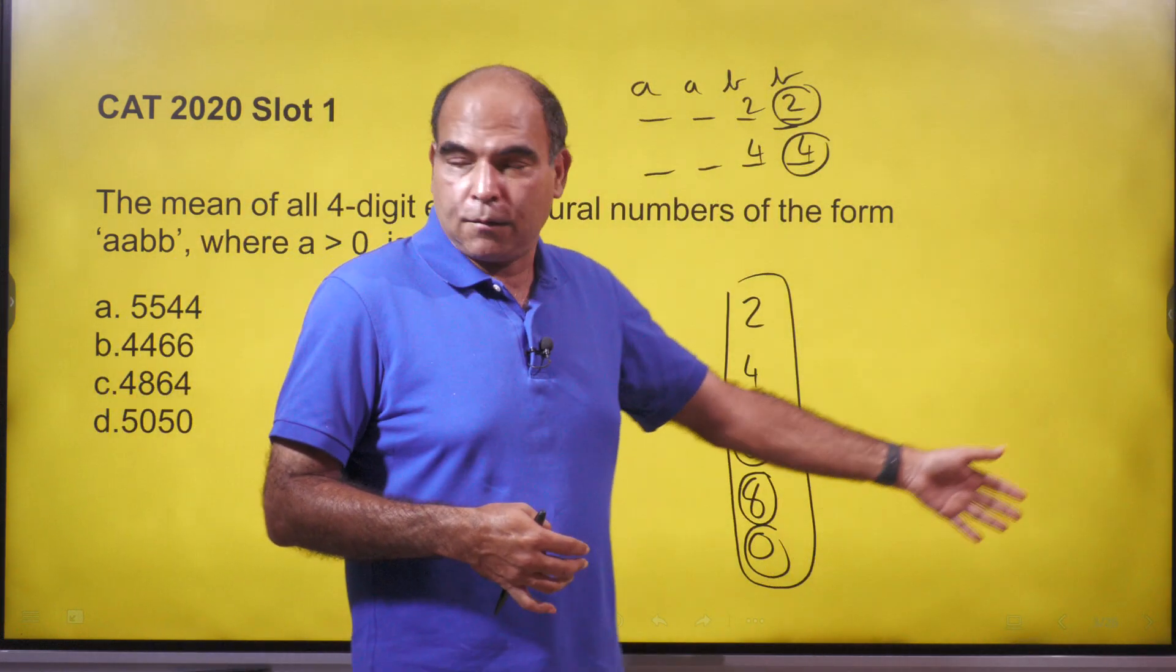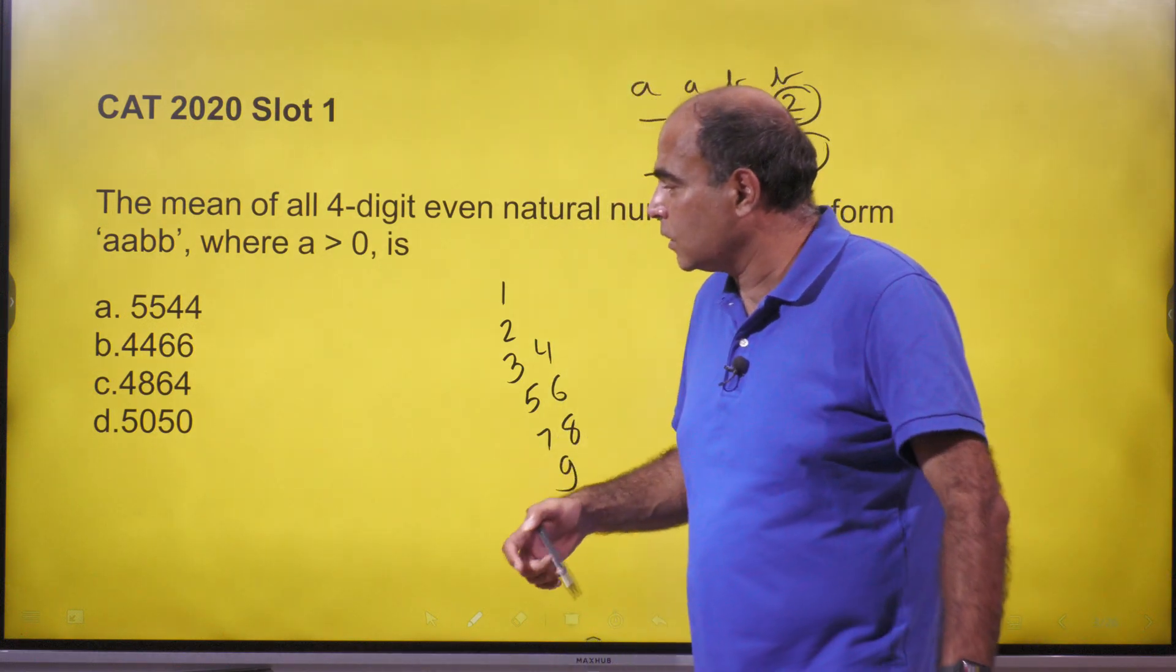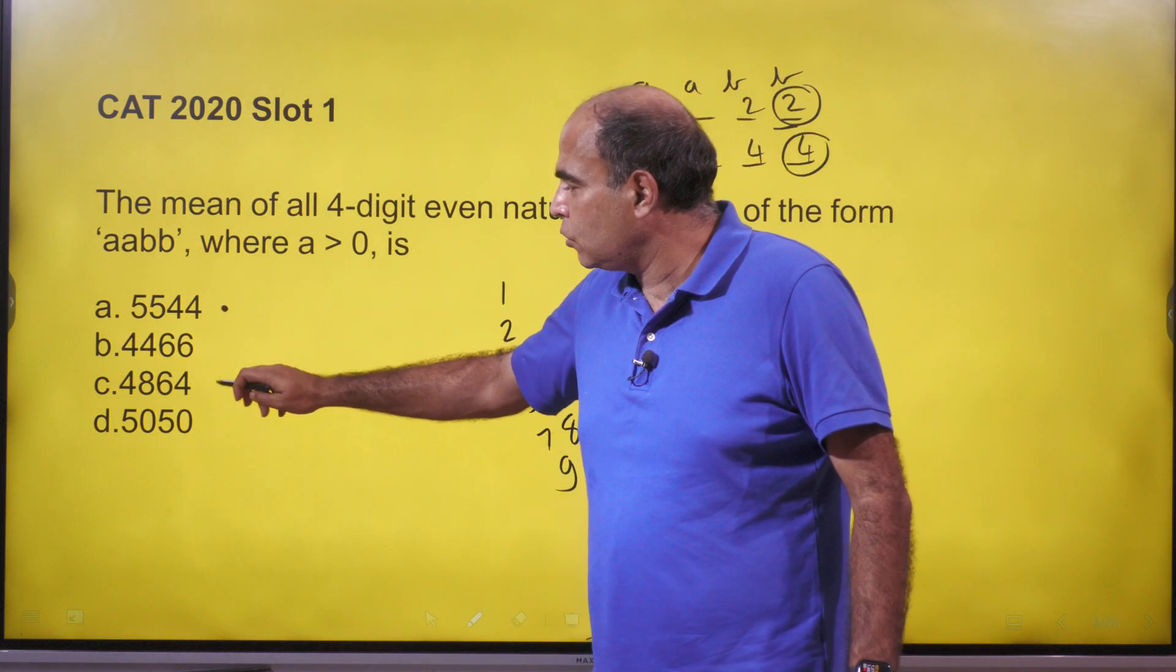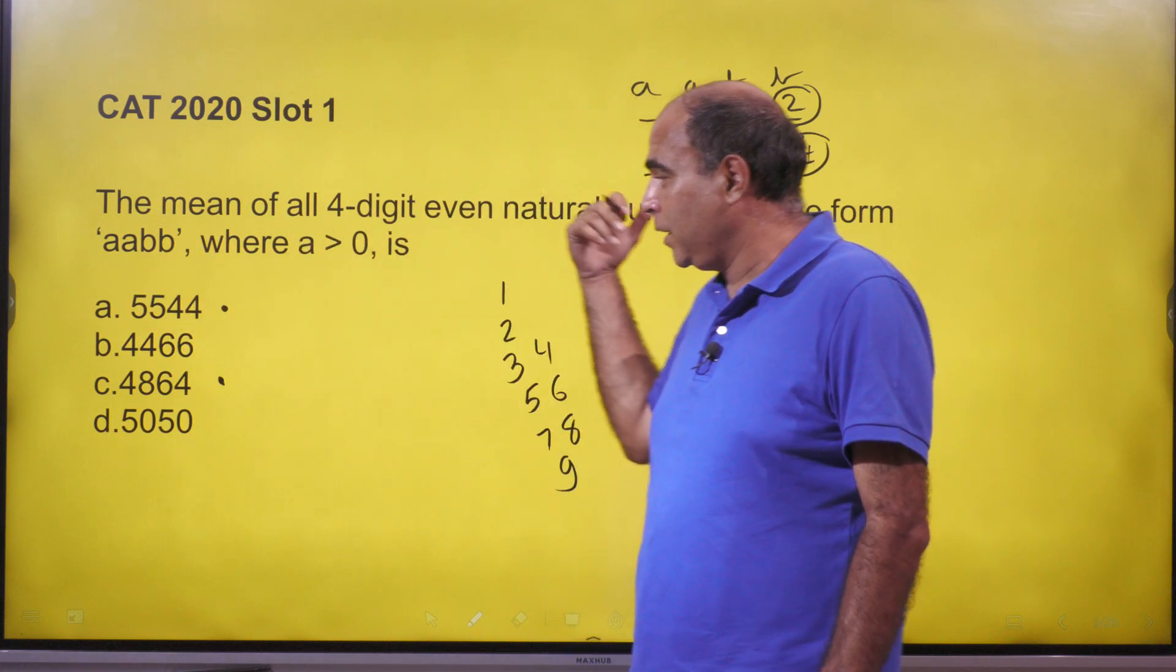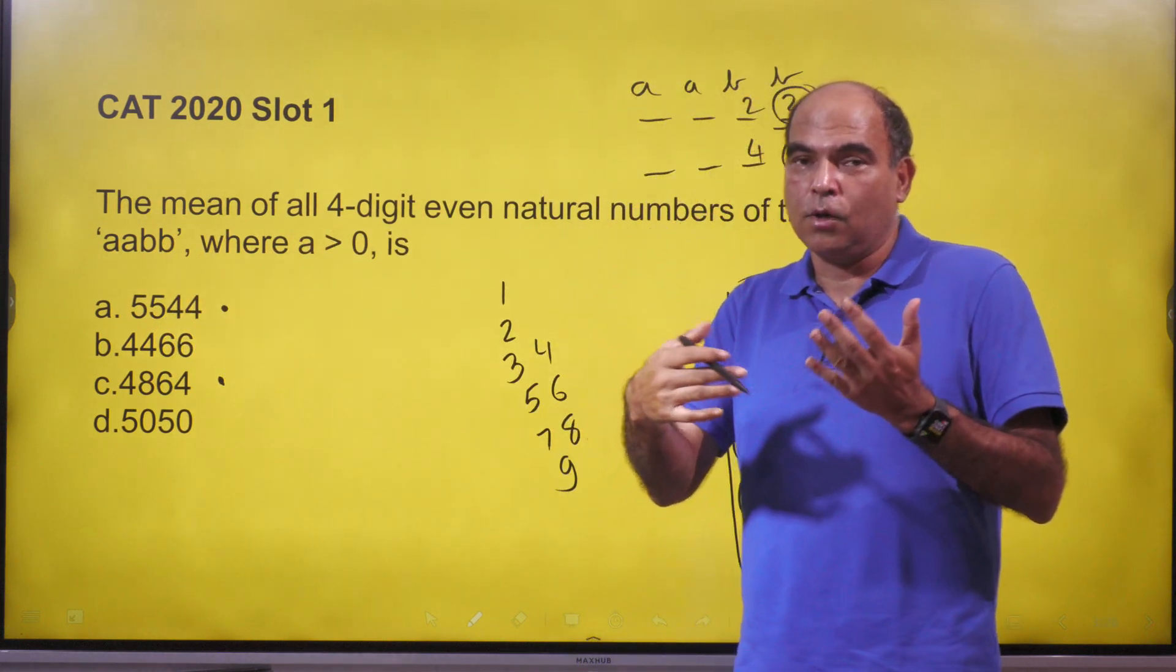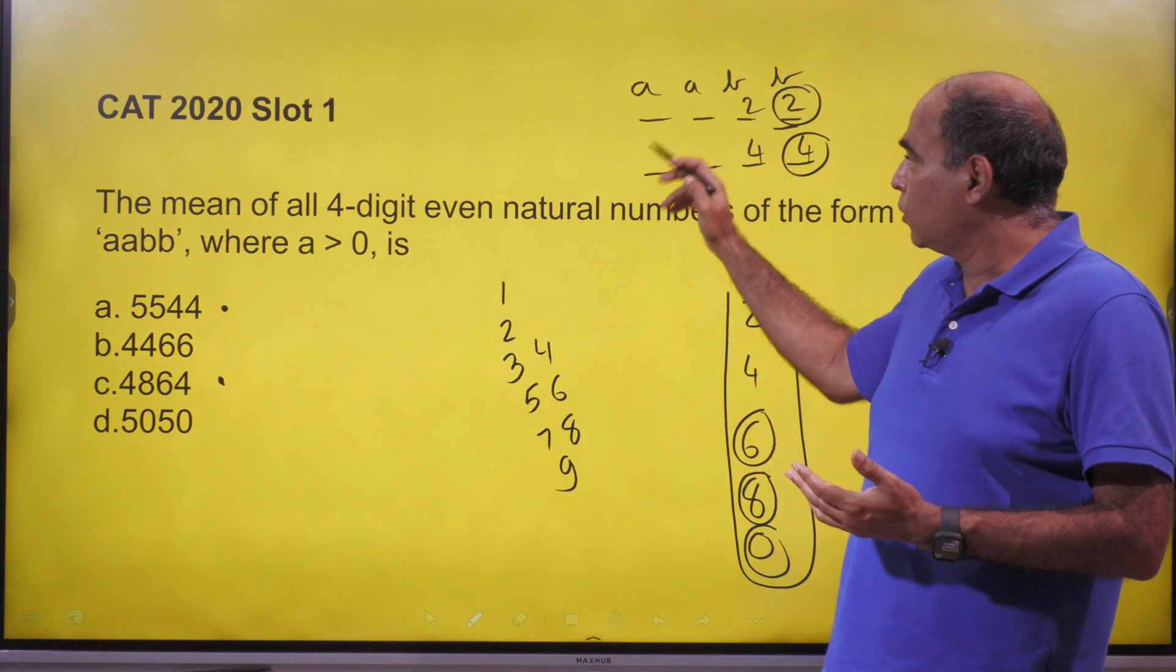And once I get that the average of the last digits is 4, I am only between these two options. And if the last digit has an average of 4, the previous one will also have an average of 4 because b is repeated. Then the thought becomes, okay, what about the first two digits?